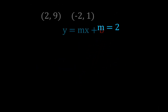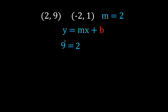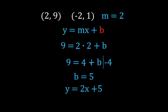Now let's get b. I chose the point (2, 9) — no negative signs, makes it a little easier. So y is 9, slope is 2, x is 2, plus b: 9 equals 4 plus b. Move the 4 over — subtract 4 from both sides — and b equals 5. We found slope equals 2 and y-intercept equals 5, so the equation of the line through (2, 9) and (-2, 1) is y equals 2x plus 5.